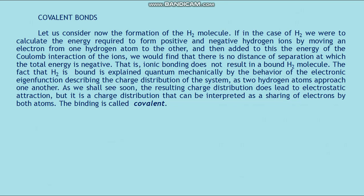Since the electron motion is very rapid compared to the nuclear motion, we can assume that the nuclei are at rest at a distance r apart with a single electron moving in their Coulomb fields, and then determine the electron energy from the Schrödinger equation. We next set r as a variable and consider both the electron energy and the internuclear Coulomb repulsion energy as a function of the internuclear separation. The total energy of the system is the sum of these two energies and the system will be bound if the total energy exhibits a minimum at some value of internuclear separation.